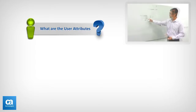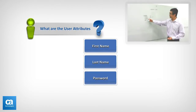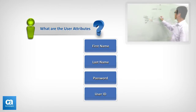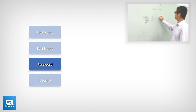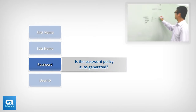Moving along, I would then ask: for these users, what information are we collecting? The typical answers would be first name, last name, password, user ID, etc. I would then drill into each of these attributes and, thinking as a child, ask more questions — such as: a password was mentioned, so is there a password policy? Is it auto-generated, or can the user specify the password they would like?